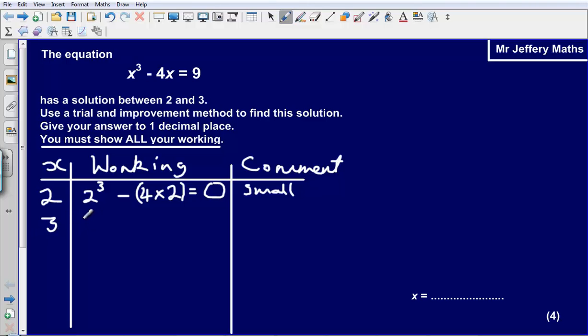Now let's substitute 3 in. 3 cubed gives us 27 minus 4 times 3. So 27 minus 12, that is going to give us an answer of 15. So here we can see that that answer is too large. So we will just put big in our comment box.